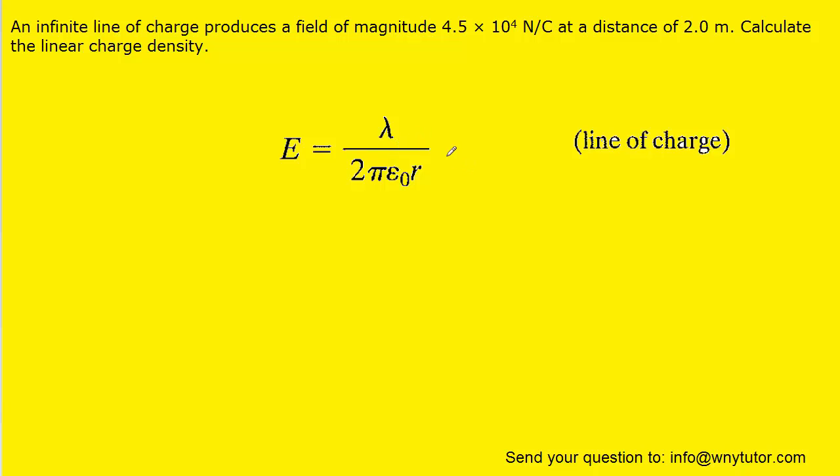Since we're trying to calculate the linear charge density, why don't we go ahead and multiply both sides of this equation by 2 pi epsilon r. That way it'll cancel out on the right-hand side.